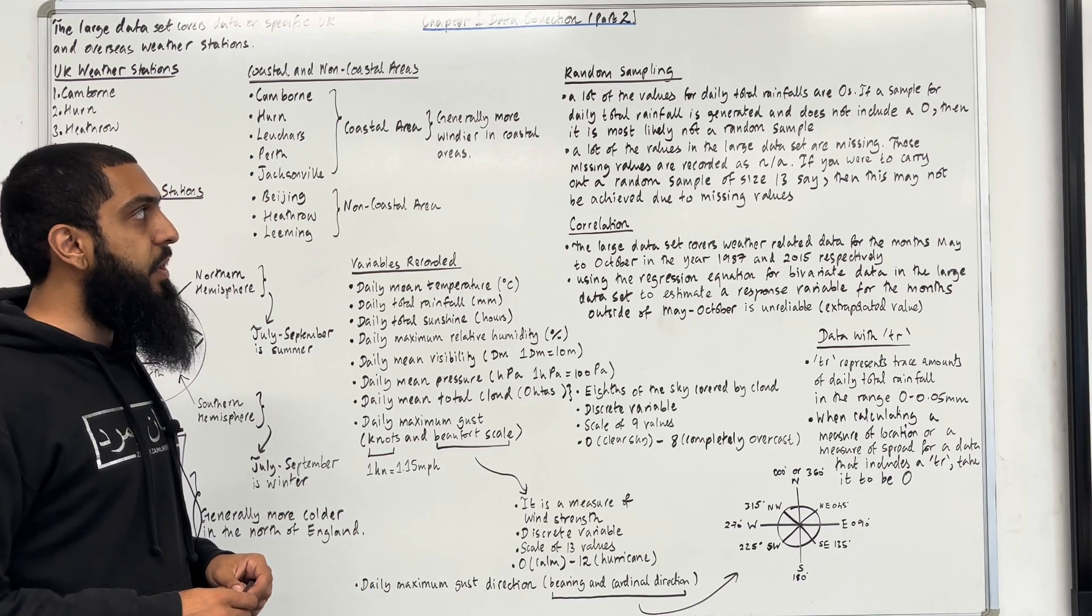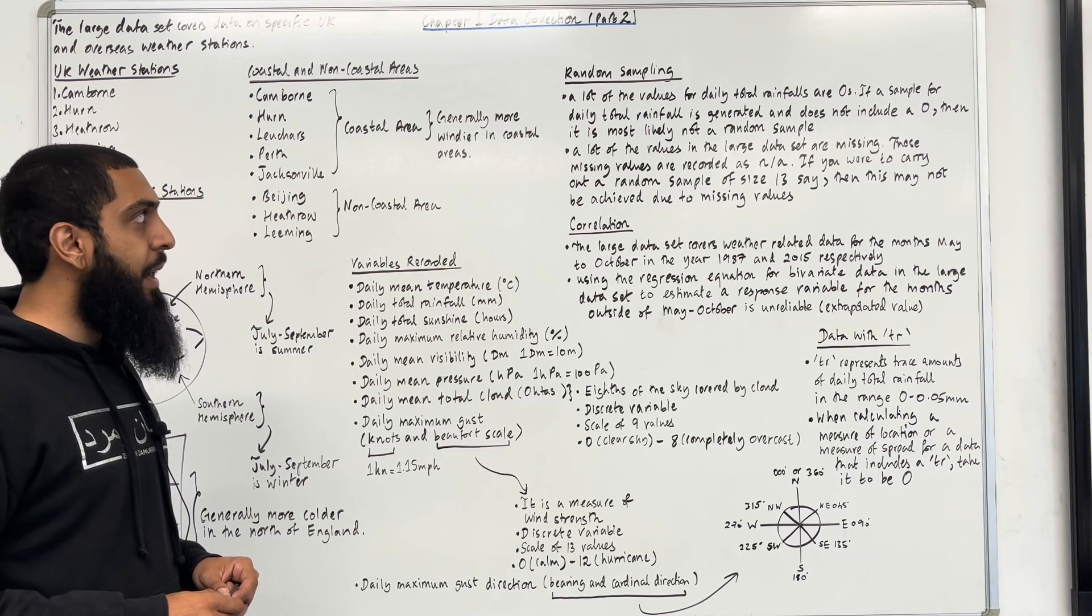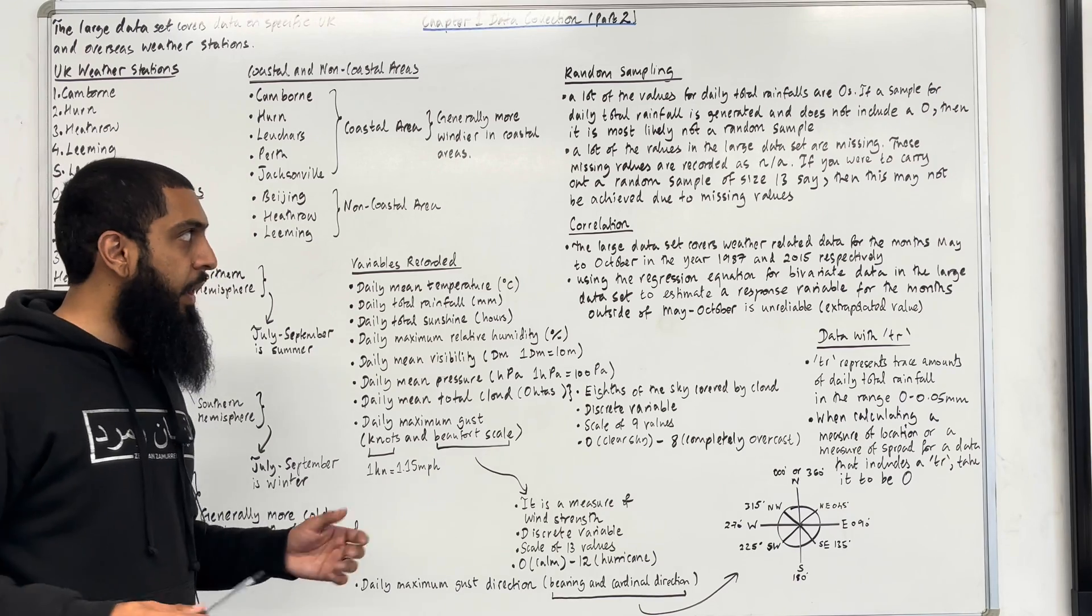If a sample for daily total rainfall is generated and does not include a 0, then it is most likely not a random sample.